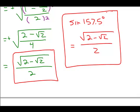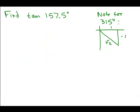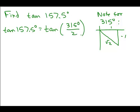Now we need to find out the tangent of 157.5 degrees. The tangent of 157.5 degrees is the same thing as the tangent of 315 degrees over 2. So I could use one of the half angle identities. There are 3 half angle identities. You have to decide whether it's positive or negative, which isn't so bad because we know that 157.5 is in quadrant 2 where X is negative and Y is positive. So it's going to be negative.